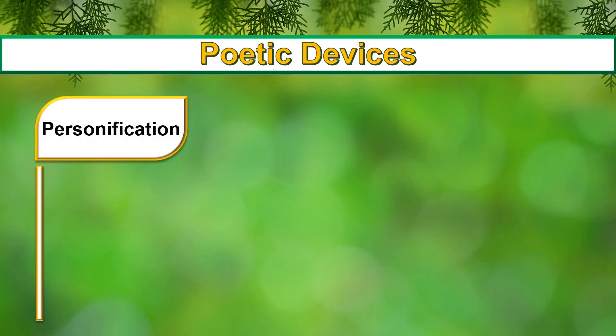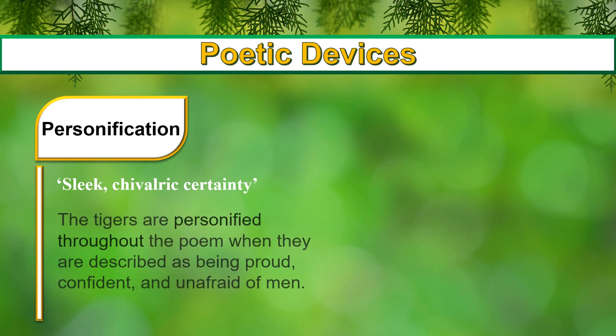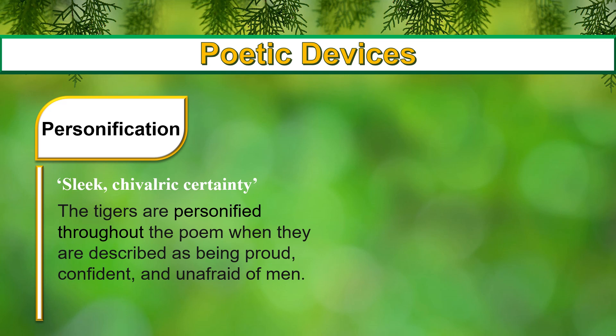Personification: 'They pace in sleek, chivalric certainty.' The tigers are personified throughout the poem when they are described as being proud, confident and unafraid of men standing beneath the tree. The tigers are given human traits and specifically described as having chivalric certainty. Chivalry refers to the code of conduct a medieval knight would adhere to; in modern times, chivalric implies a gentleman who is courteous and considerate of women. The tigers are thus associated with heroic men.